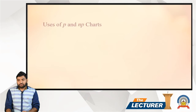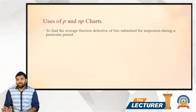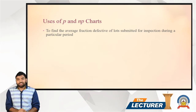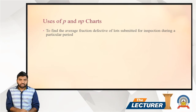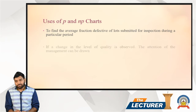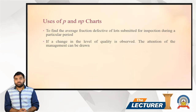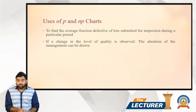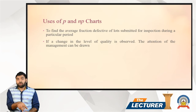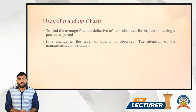Now moving to the uses of p and np chart. First, they are used to find the average fraction defective of lots submitted for inspection during a particular period. Second, to find if a change in the level of quality is observed. For example, if a company like MRF uses a certain grade of rubber to make tires and there is any change in the quality of that rubber, the middle or lower level management informs top management that quality has slightly dropped.